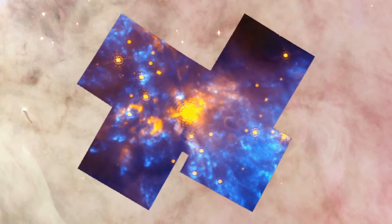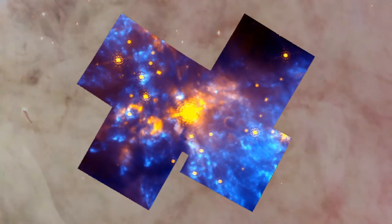For example, take this optical image of the famous stellar nursery in Orion. But look how different it is when seen through the eyes of an infrared camera.